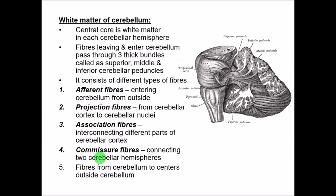Coming to the white matter: the grey matter covers the outside surface of the cerebellum, and deep inside is the white matter, made up mainly of fibres. The central core is the white matter in each cerebellar hemisphere. The fibres leaving and entering the cerebellum pass through three thick bundles called peduncles: the superior cerebellar peduncle, the middle cerebellar peduncle, and the inferior cerebellar peduncle.